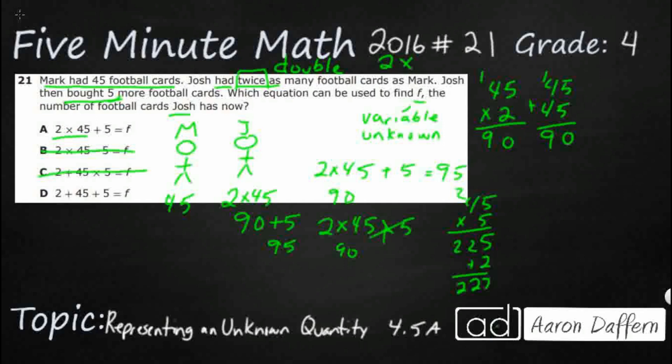And then D just never takes into account this twice. It just adds everything. Instead of twice being two times, we just line it up two and 45, five. Doesn't quite work. So that is going to be 52. We know that we need this 95 right here, which means our answer is A.